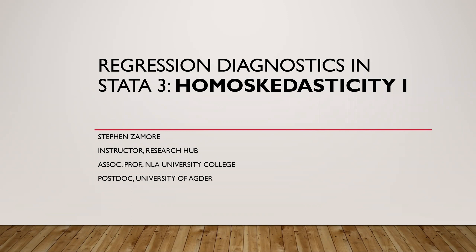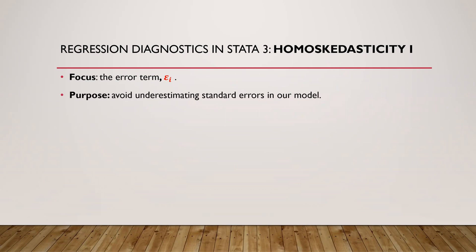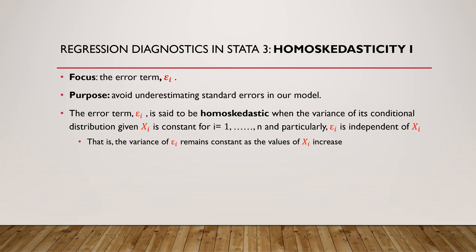Welcome to our third topic on regression diagnostics in Stata, and that is the homoscedasticity assumption. We continue to focus on the error term, as we did in the previous video about the zero mean error term. The purpose of this topic is to avoid underestimation of the standard errors of the regression model. The error term is said to be homoscedastic when the variance of its conditional mean given x is constant for all units, and the epsilon error term is independent of the independent variables x.